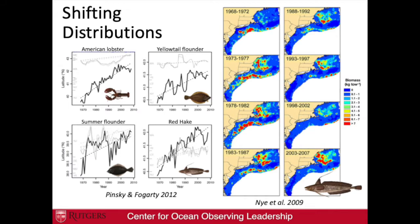Visually, the red hake distribution is shifting northward from 1968 to the most recent data — we're not seeing red hake in the valley as we used to. Future directions need to focus on timing: any changes in the timing of cold pool formation and breakdown are really important for migration times, abundance, and life history for several species. We're concerned about temperature in general but also about the timing of the changes we're seeing happening.